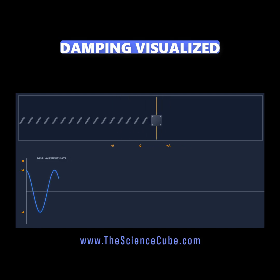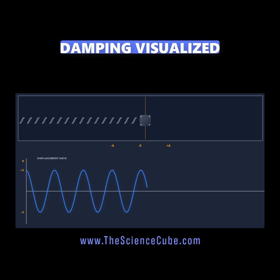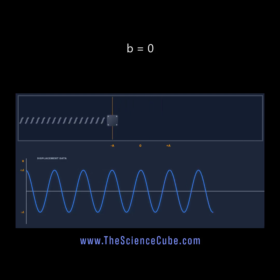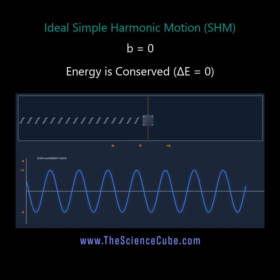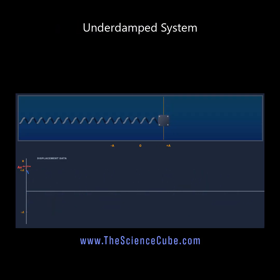Imagine a mass oscillating in a perfect vacuum. Without resistance, the damping constant B is zero. The motion is purely periodic, conserving energy forever. This is ideal simple harmonic motion.